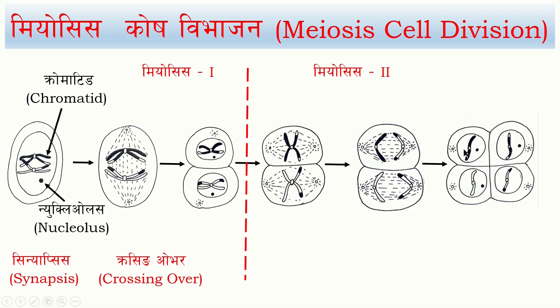The first cell and the last cell result in 4 cells total. The second cell has 2 chromosomes and the last cell has 4 chromosomes. The cell division results in 4 cells, and the second cell has 4 chromosomes.